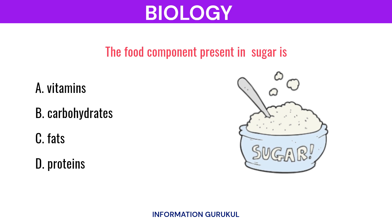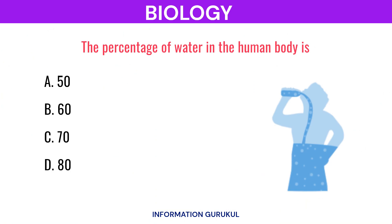The food component present in sugar is Carbohydrates. The percentage of water in the human body is 70%.